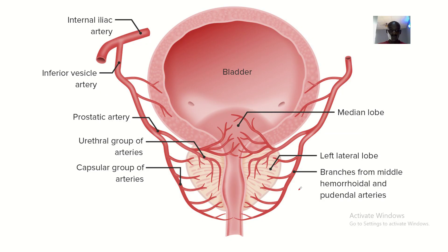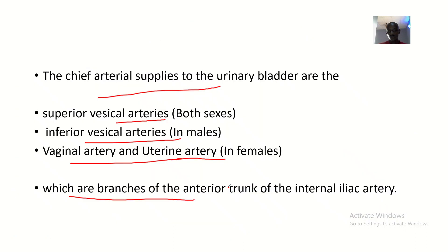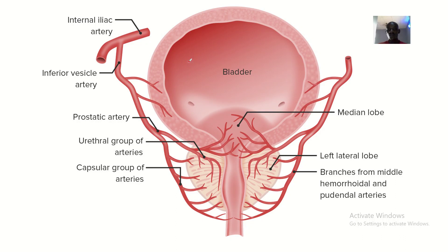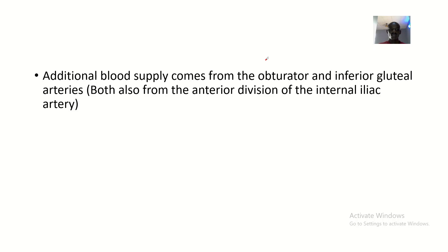This specimen is not showing the blood supply from the top clearly, and most of the blood vessels are not labelled the way they should be. I can see the inferior vesical artery here. The superior vesical artery is supposed to supply the top portion, but it's not labelled. The inferior vesical artery is in males, as noted.